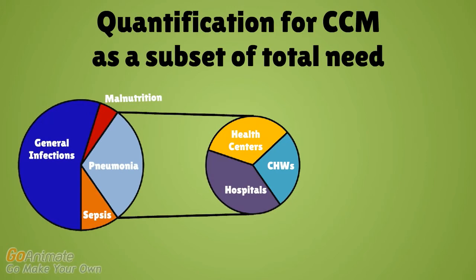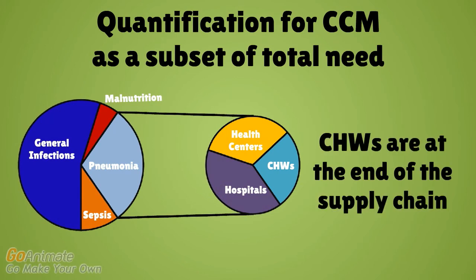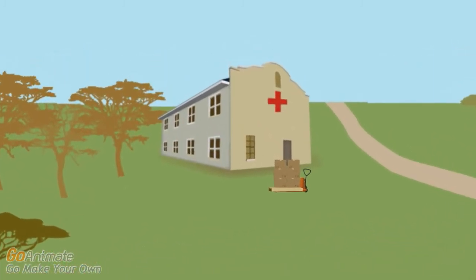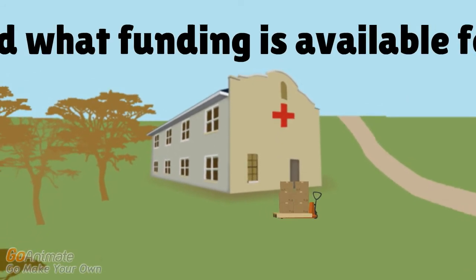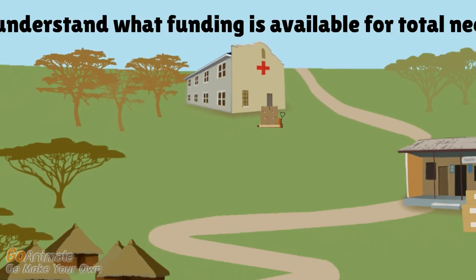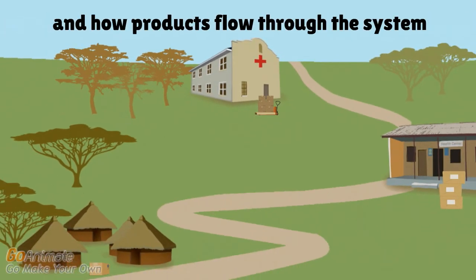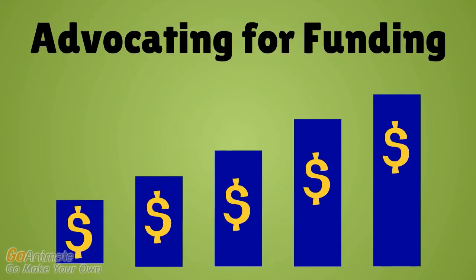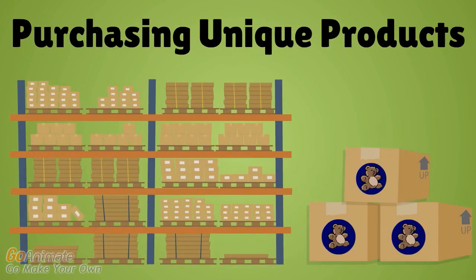Quantification for CCM represents a subset of total need for these products, and is especially important because community health workers are at the end of the supply chain. Community health workers will not have enough supplies if products are all used or held by facilities higher in the supply chain. The last step is to understand what funding is available for the total need and how products flow through the system. If full funding is not available, other ways to promote product availability at the community level include advocating for additional funding to increase supply of essential medicines, and purchasing unique products or repackaging products specifically for the community level.